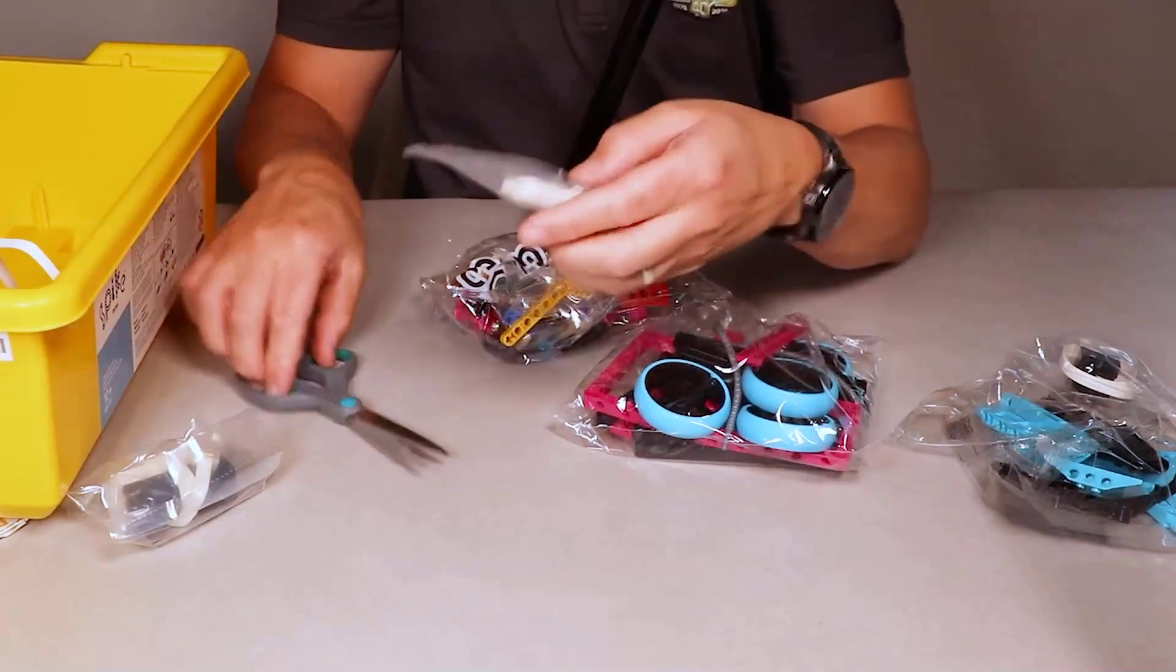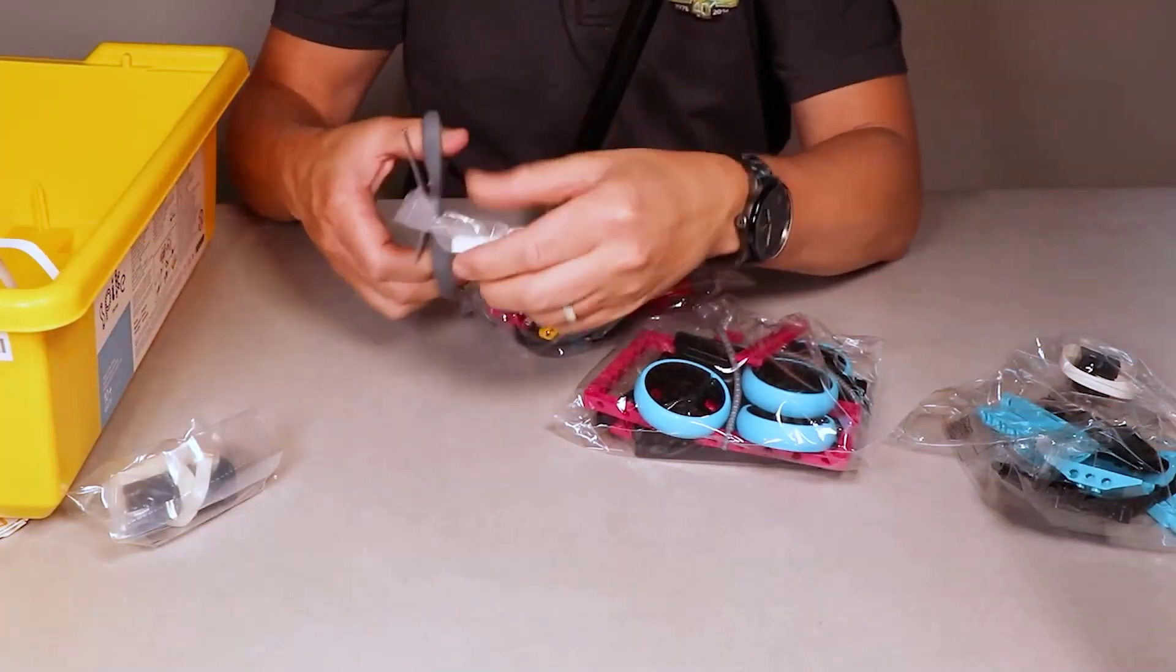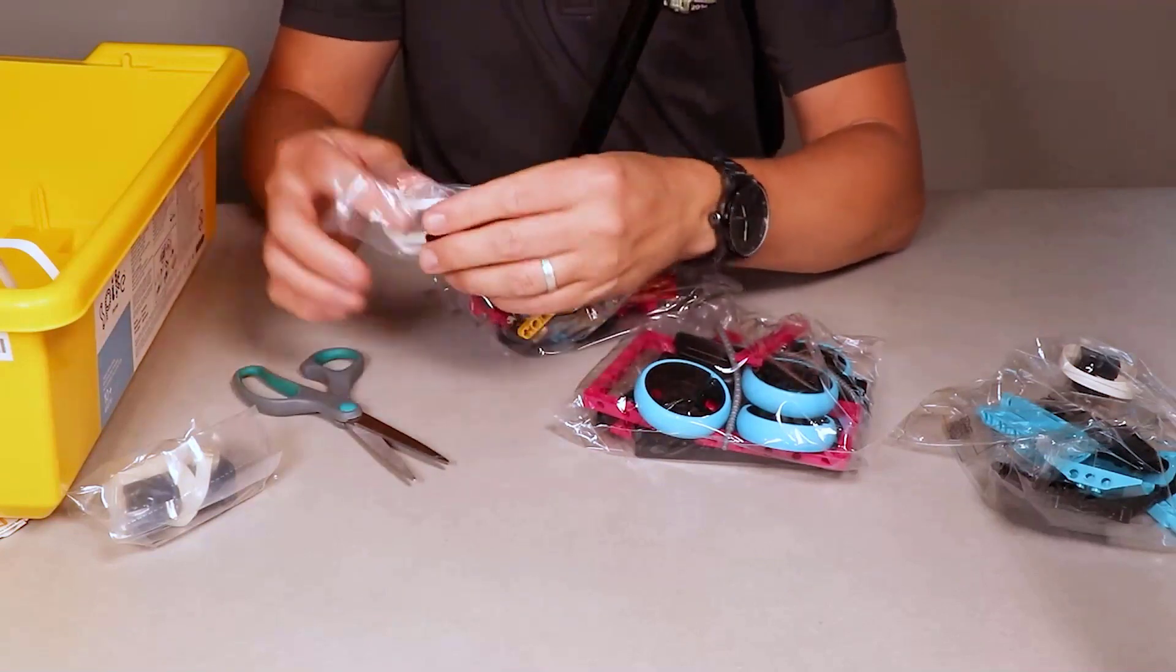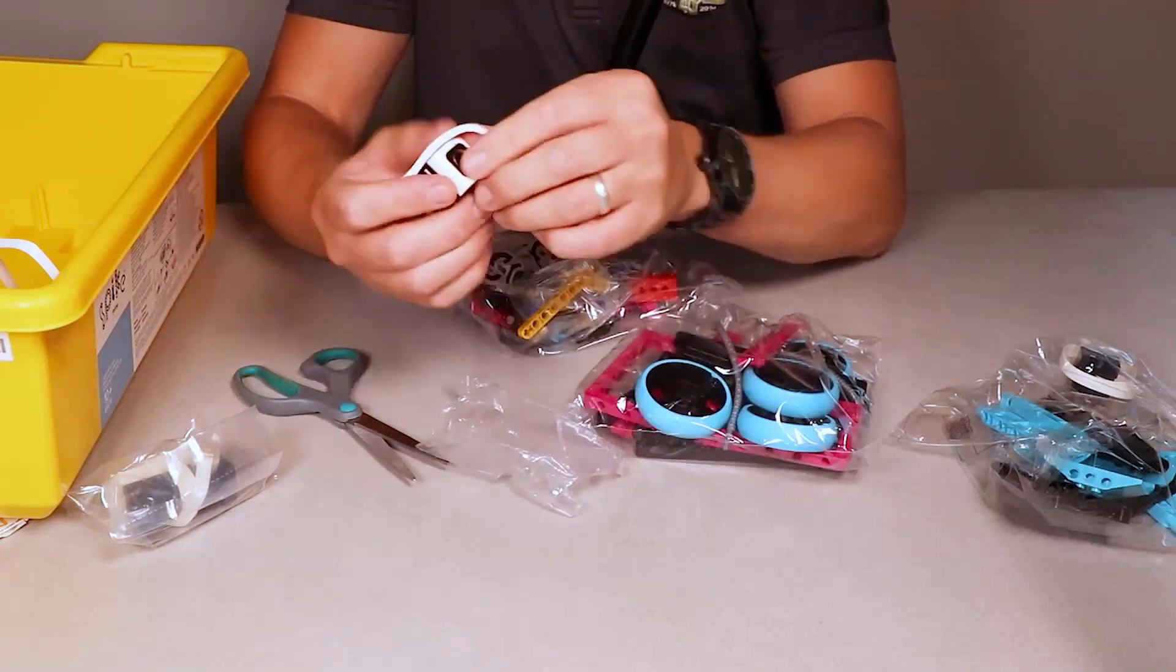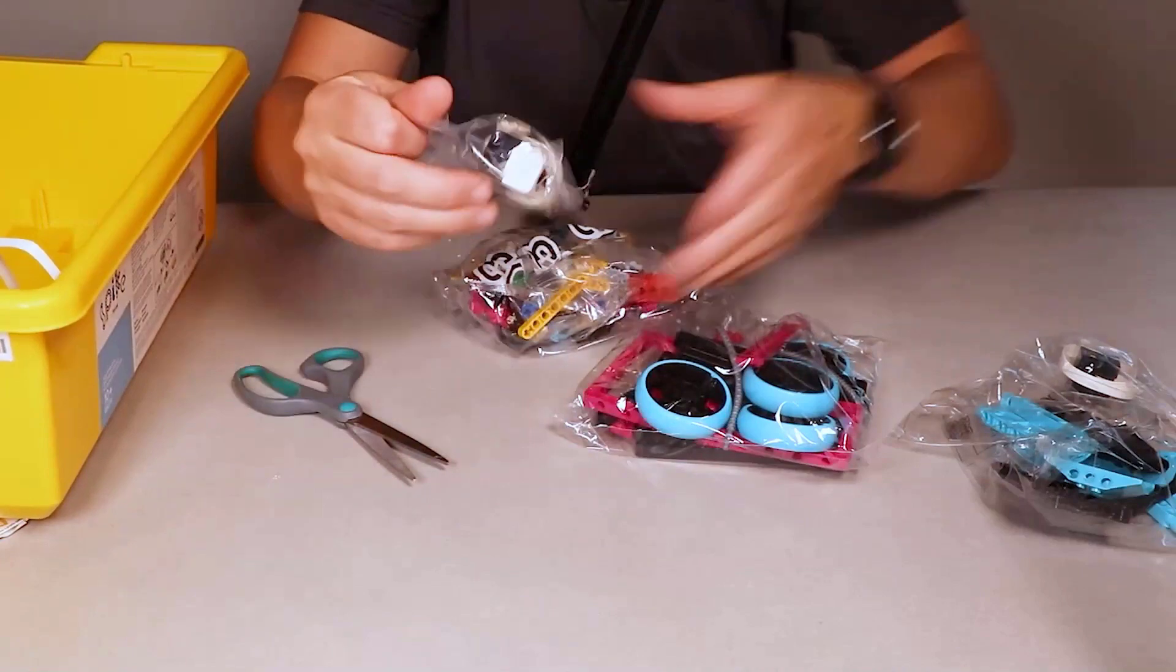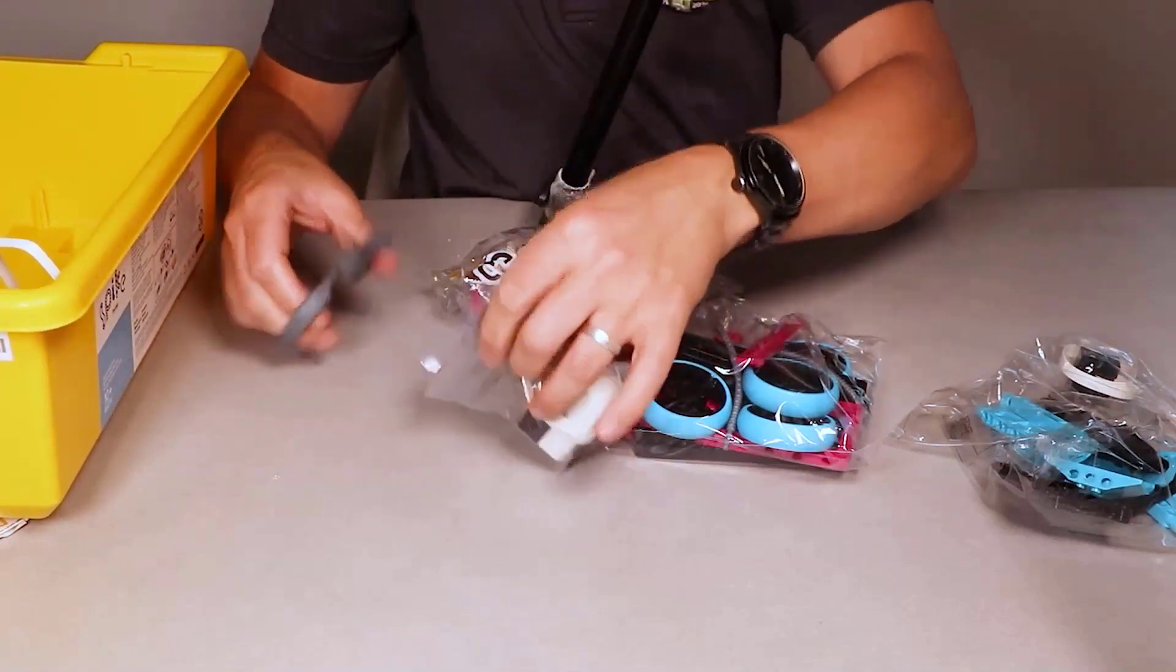It's a good idea to have a trash can nearby because we are going to be opening up a bunch of little bags throughout this process. The next thing that we have, this is our color sensor. This is a really neat little tool that can sense all the different colors. You're going to put those sensors down into the bottom of the box.